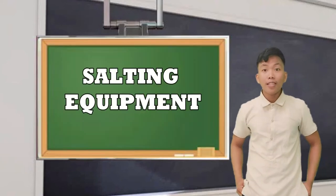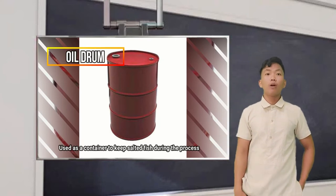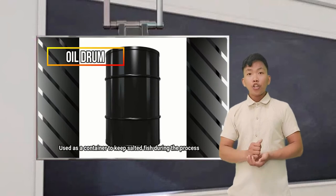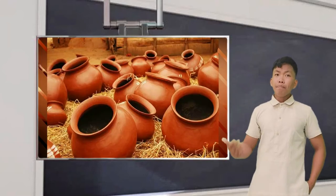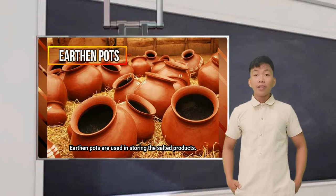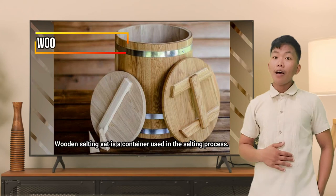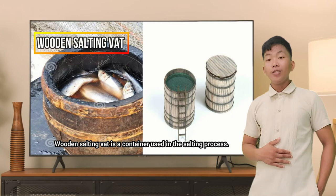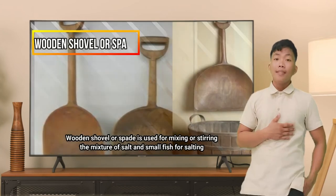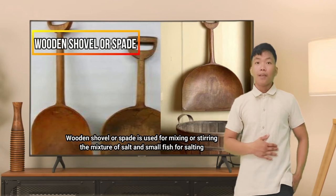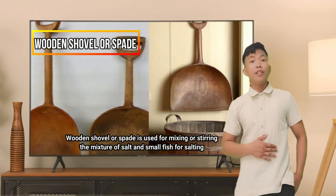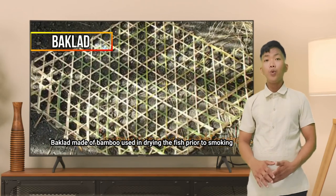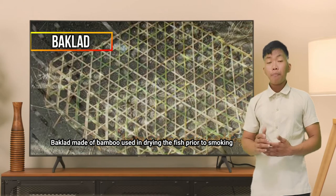Let us proceed to the salting equipment. First, we have the oil drum, used as a container to keep salted fish during the process. Earthen pots are used in storing salted products. We have the wooden salting vats — a container used in the salting process. Next is the wooden shovel or spade, used for mixing or stirring the mixture of salt and small fish for salting. A baklad is made of bamboo and used in drying fish prior to smoking.